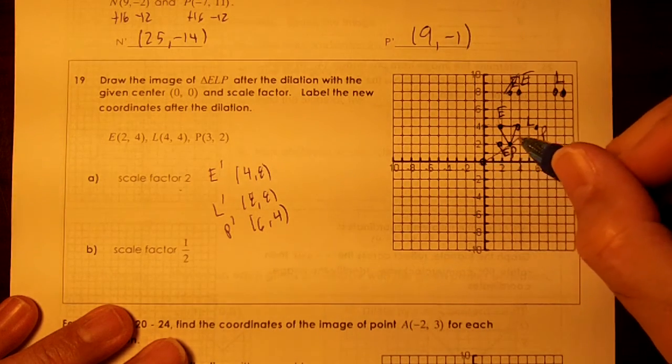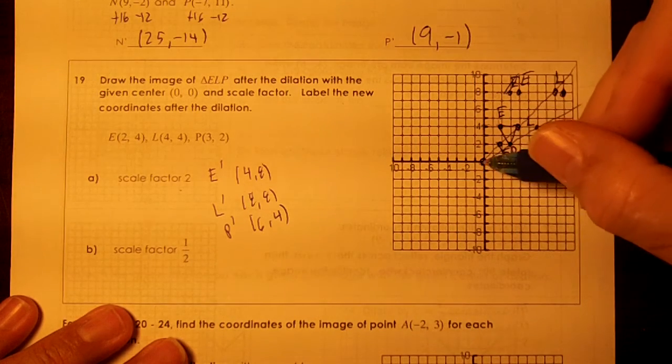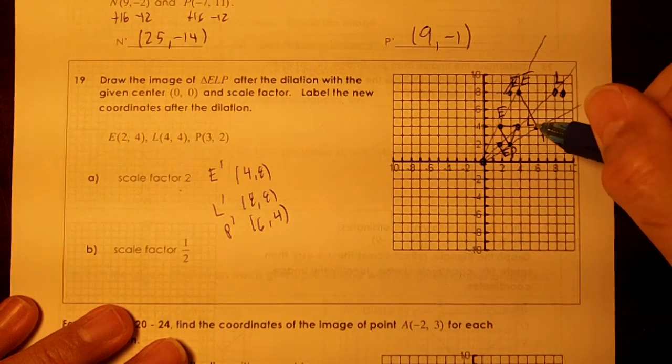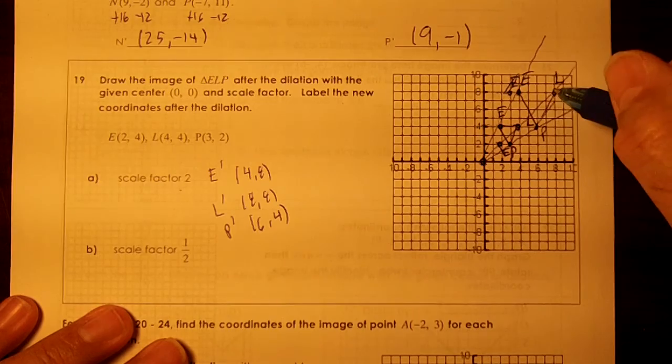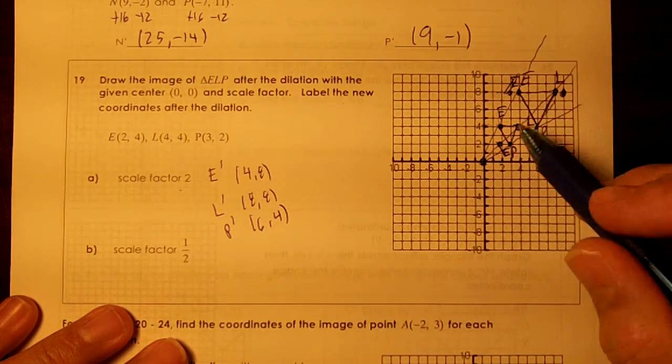And remember, these are going to draw your vanishing point lines. Okay, so this new triangle just got bigger, didn't it? The edges doubled, didn't it? From here to here.